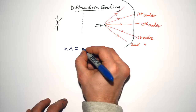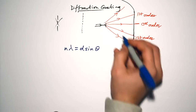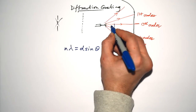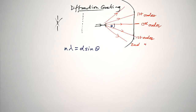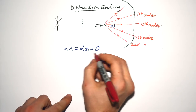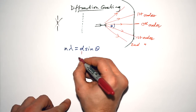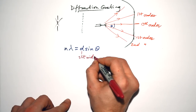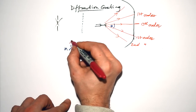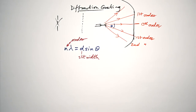The equation for the diffraction grating is: nλ = d sinθ, where θ is the angle between the zeroth order and the order being considered, d is the slit separation in the grating, n is the order number, and λ is the wavelength.